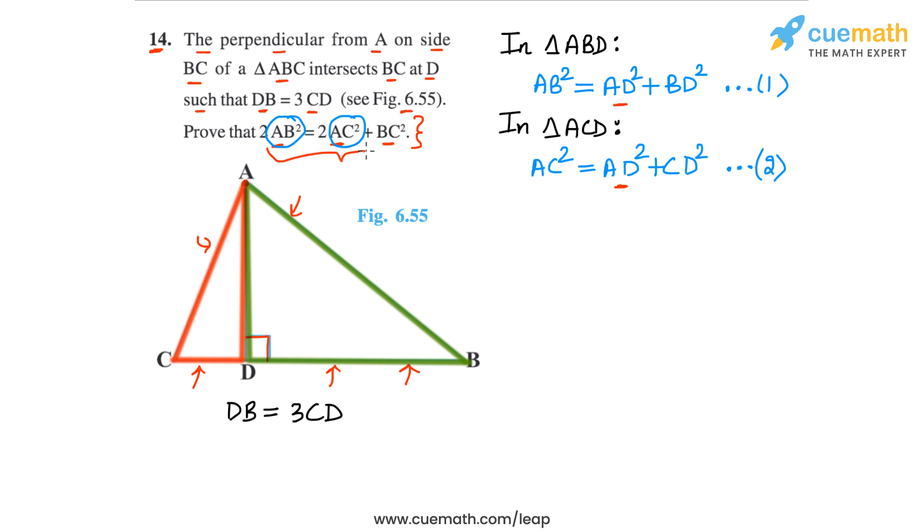By subtracting, we can get rid of the AD square terms in the two equations. I'm going to do 1 minus 2. On the left side, I will get AB square minus AC square. On the right side, the AD square terms will cancel by 1 minus 2, so I will get BD square minus CD square.